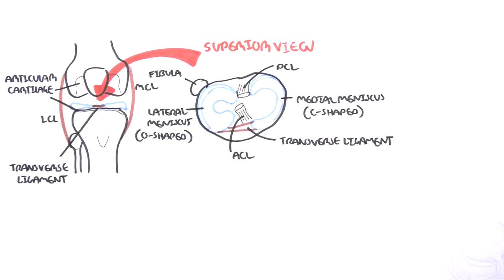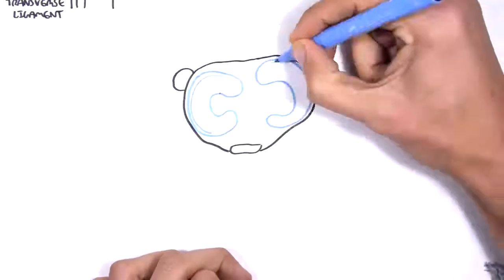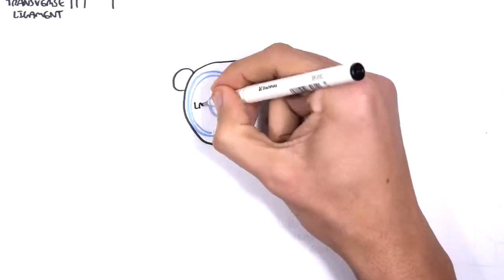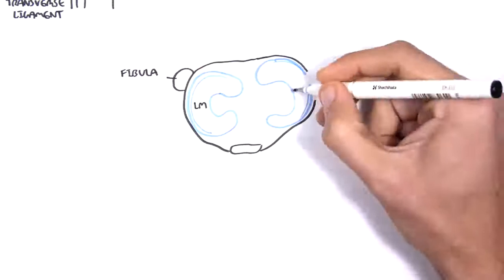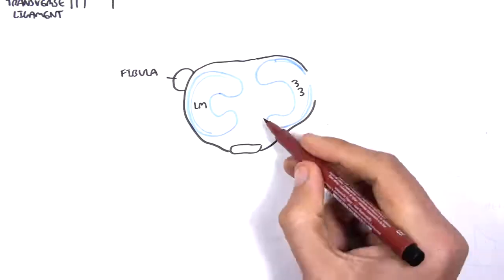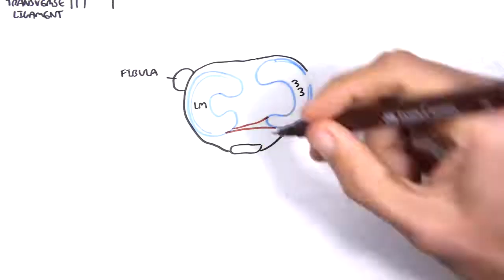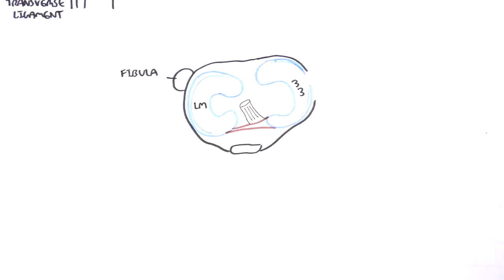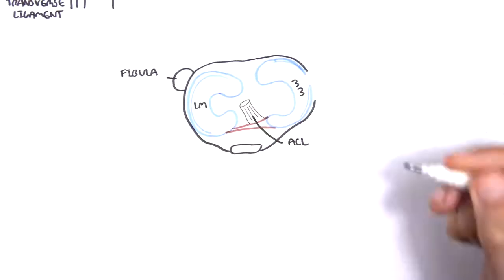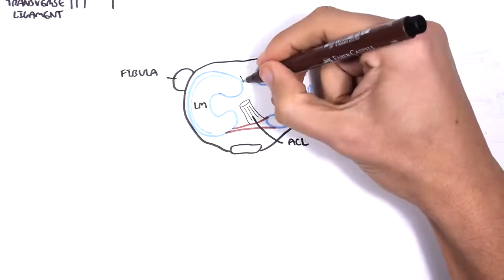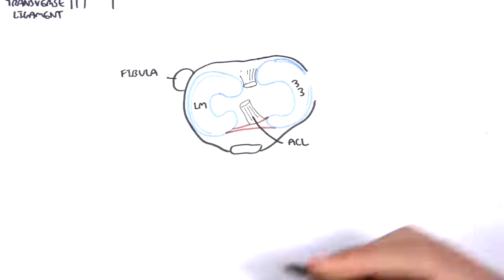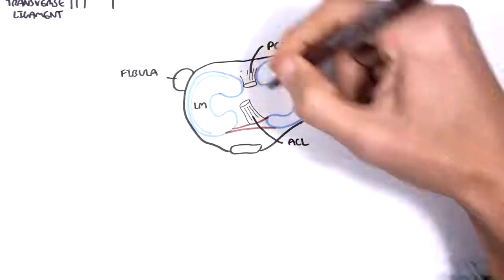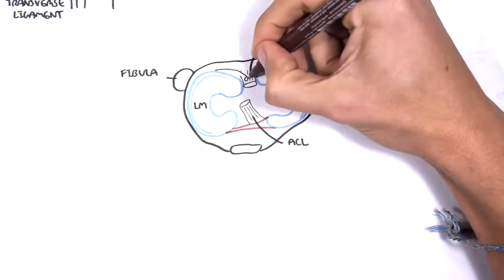So let's look at again the superior view of the tibial bone, looking from the top. Now to orientate ourselves, here again you have your lateral meniscus. Then you have your fibula, the head of the fibula here. Then you have your medial meniscus. Again your inner cruciate ligaments, your ACL connecting to the anterior part of the tibia. And then you have your PCL, your posterior cruciate ligament attaching to the posterior part of the tibia.